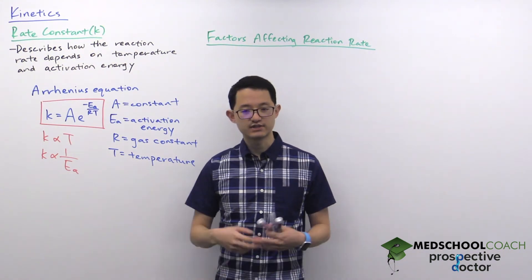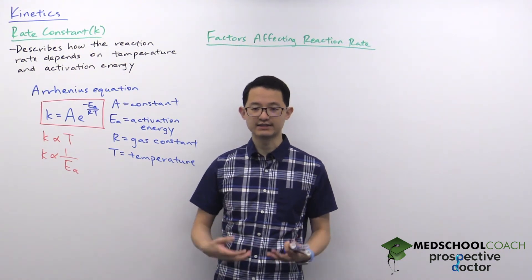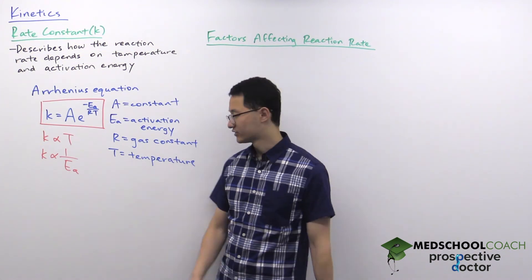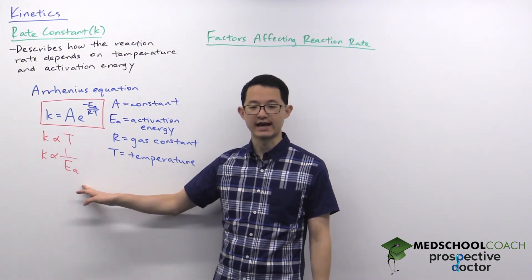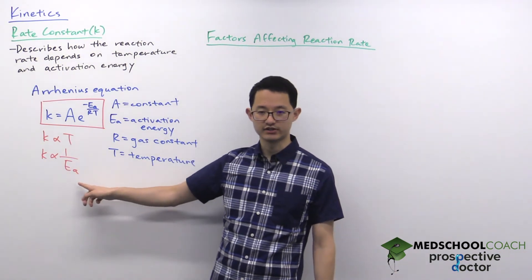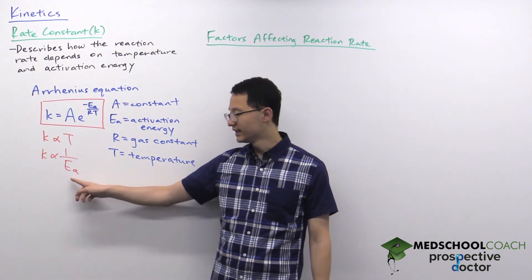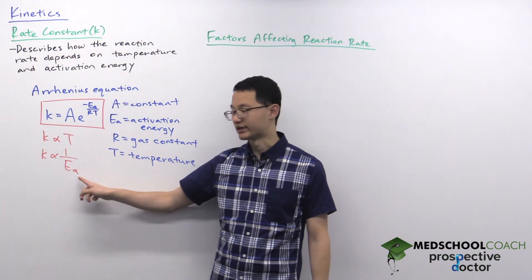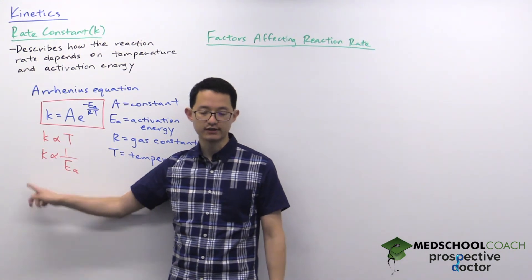And from this we can also understand how catalysts can increase the reaction rate. So catalyst decreases the activation energy. And you can see since the rate constant and activation energy are inversely related, if you decrease the activation energy that will increase the rate constant, so that will increase the rate of the reaction.